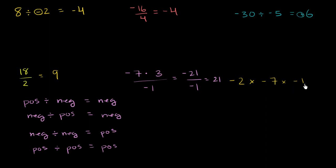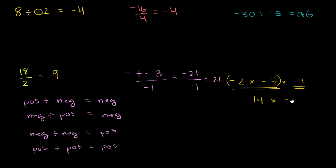Now let's do this last one. This is all multiplication, but it's interesting because we're multiplying three things. We go from left to right: negative 2 times negative 7 — both are negative, the negatives cancel out, so this gives us positive 14. Then we multiply positive 14 times negative 1. Now we have a positive times a negative — exactly one of them is negative — so this gives me negative 14.